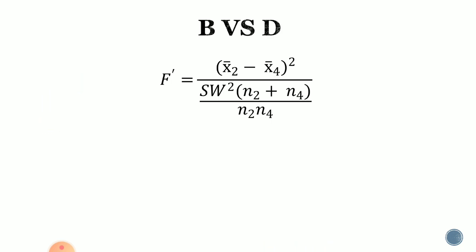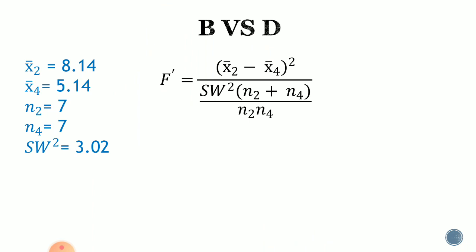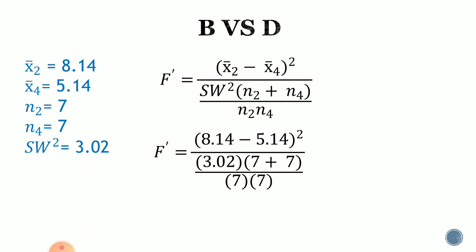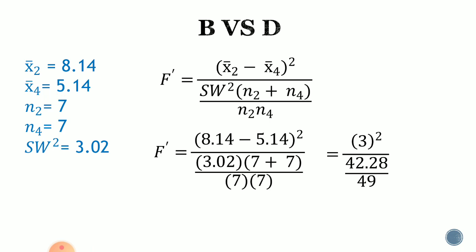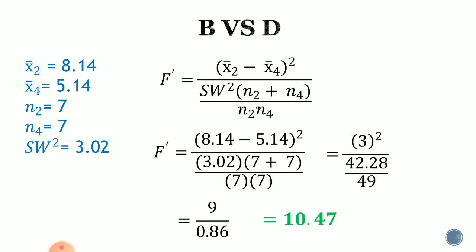Next is B versus D. The mean of group 2 is 8.14, and the mean of group 4 is 5.14. N sub 2 and N sub 4 are both 7, and SW squared equals 3.02. Substituting into the formula: the quantity 8.14 minus 5.14, squared, all over 3.02 times the quantity 7 plus 7, all over 7 times 7. That gives 3 squared over 42.28 over 49, equal to 9 divided by 0.86, which equals 10.47.